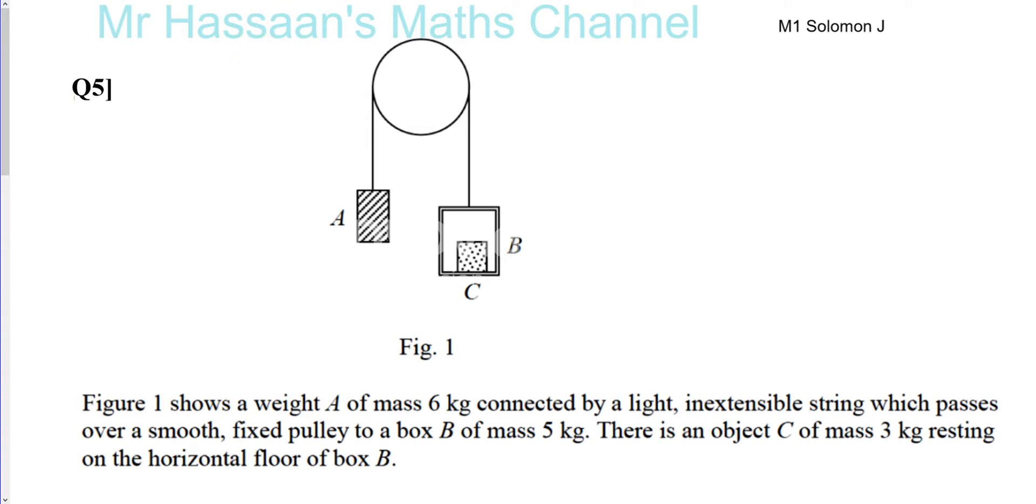So let's get started. Here we have a figure that shows a weight of mass six kilograms. So we know that the weight of this mass is six times G, six G Newtons. And connected by a light and extensible string which passes over a smooth fixed pulley to a box B of mass five kilograms. So the mass of this box is five kilograms. So you're going to have five G Newtons for the box and there is an object C of mass three kilograms resting on the horizontal floor of box B. So you're going to have a mass of three kilograms over there. So you're going to have here five G Newtons for the weight of the box and three G Newtons, the weight of the object resting on the floor of the box B.